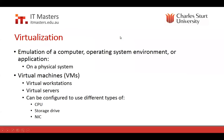So virtualization is basically the emulation of a computer operating system environment or an application on a physical system. It can be multiple computers, operating system environments, or applications on a single system. A virtual machine can be a virtual workstation, virtual servers, virtual firewalls, virtual switches and virtual routers — pretty much a virtual anything nowadays. With Windows Server 2016 nano server technology, any particular application can be virtualized and containerized. It's pretty much unlimited now what you can virtualize.